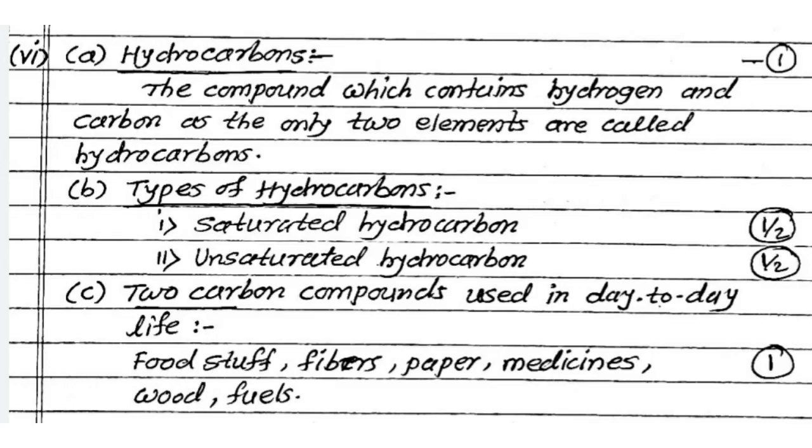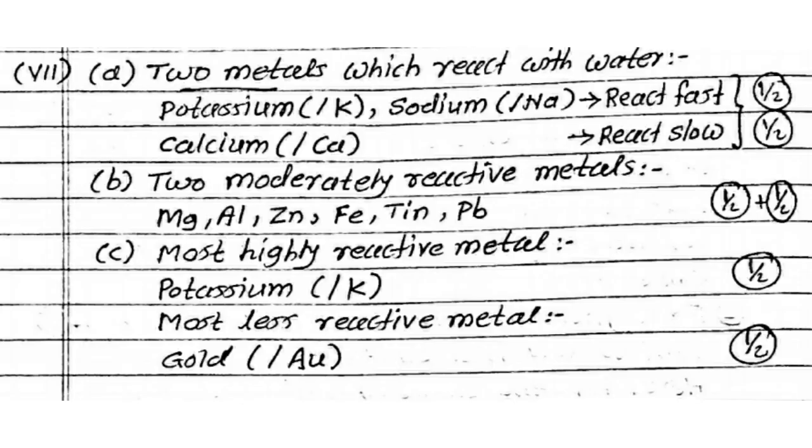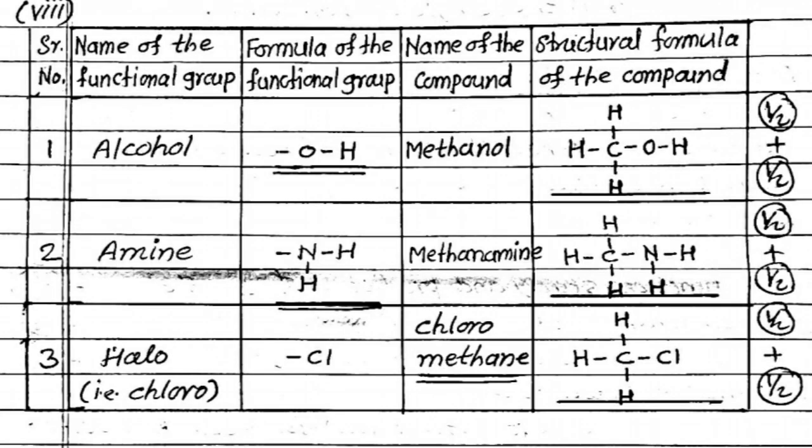In this way we are giving related to question paper and answer sheet. You subscribe our channel. You are getting benefit in your board exam. Like hydrocarbon 1 mark. If you are writing the definition 1 mark. Types of hydrocarbon like saturated and unsaturated half half mark. 2 metals react with water, any 2 you write half half mark. 2 moderately reactive, any 2 metals name. And most highly and most less reactive metal you are getting half half mark. You write the answer very specific as per the question given.